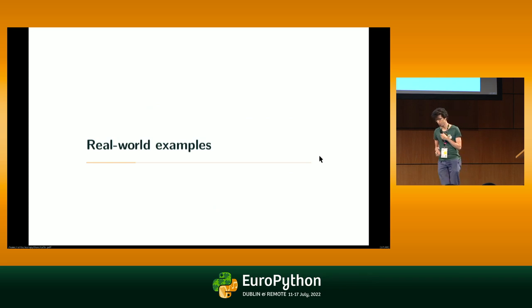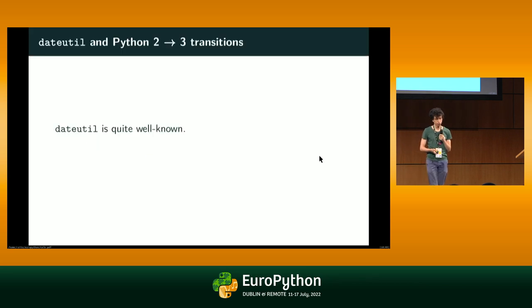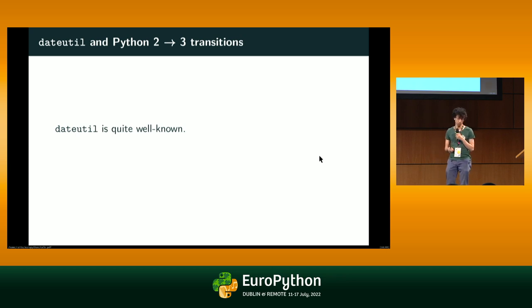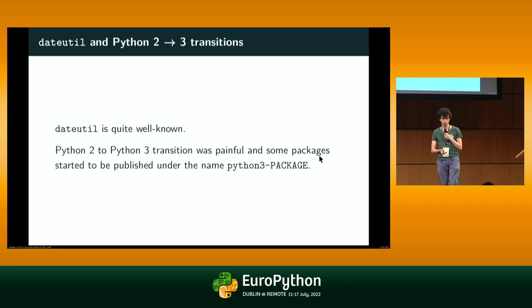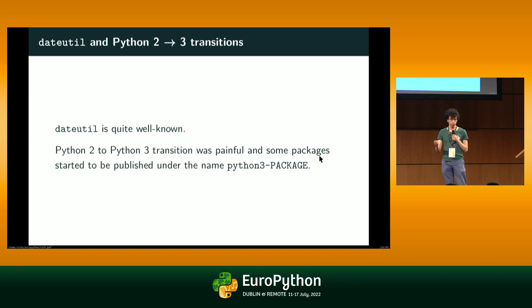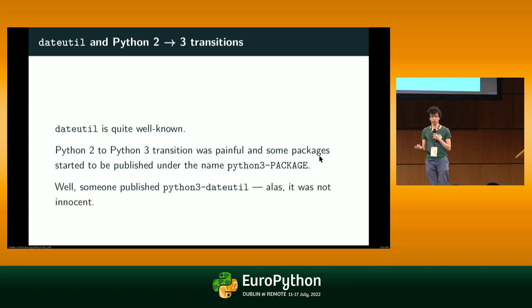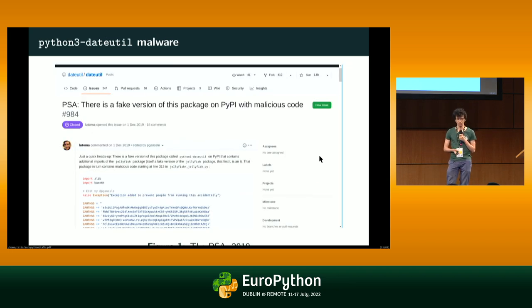Maybe we don't really care about the fact that we can run arbitrary code at install time. But unfortunately we have examples of annoying and really bad things done with these fixtures. For example, dateutil is a very well-known package to deal with dates, and during the Python 2 to Python 3 transition, someone published the python3-dateutil package — which was not an innocent package.